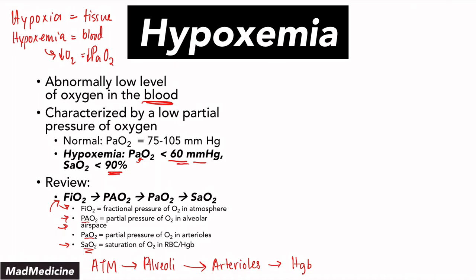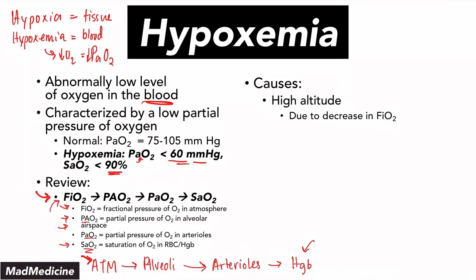Hypoxemia is going to occur if you are preventing any of these steps from the atmosphere all the way to hemoglobin, or if you're preventing the saturation of oxygen in the blood from occurring. One cause of hypoxemia is high altitude. At high altitude, you have decreased oxygen in the atmosphere — the oxygen pressure is decreased — and that means your atmospheric pressure of oxygen, the FiO2, goes down.